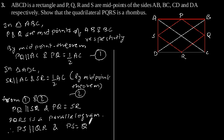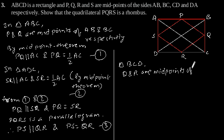Let's say this is our equation 3. Now considering triangle BCD. In triangle BCD, Q and R are midpoints of BC and CD. Therefore we can say that QR is parallel to BD and QR is equal to 1/2 BD.